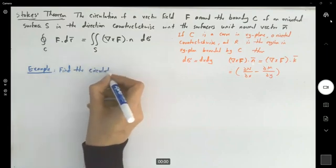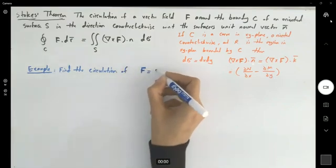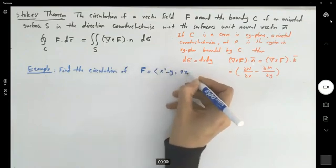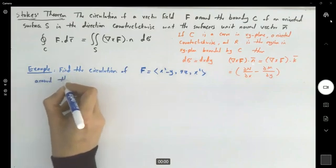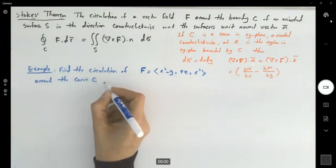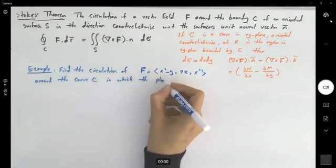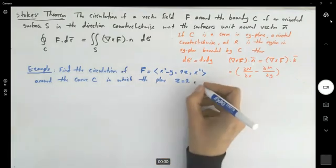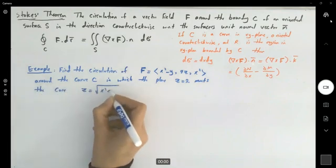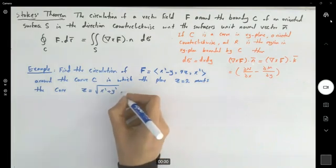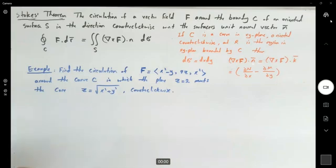Find the circulation of the field F given as (x² - y, 4z, x²) around the curve C where the plane z equals 2 meets the cone z equals the square root of x² plus y². These are the given conditions and we are interested in finding the circulation.